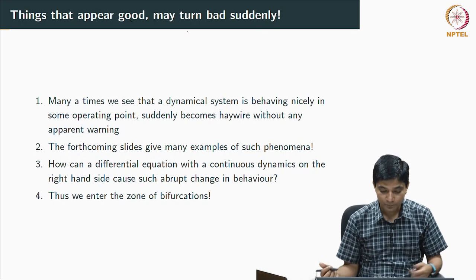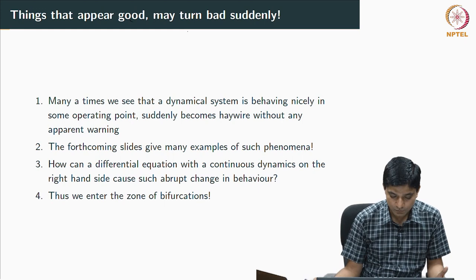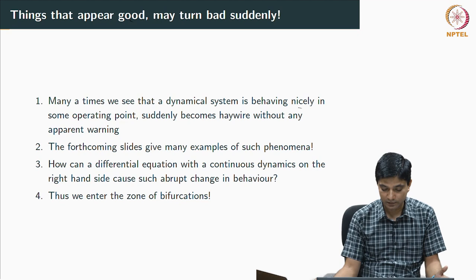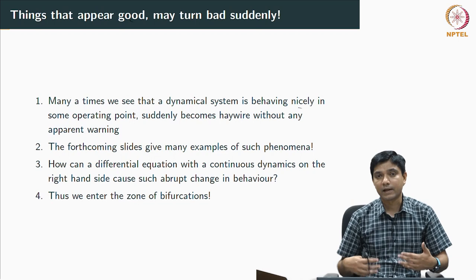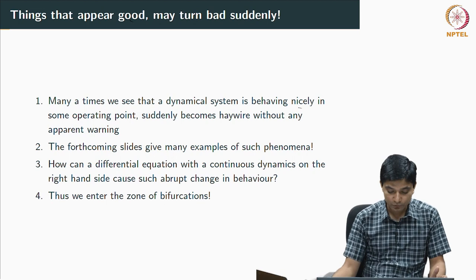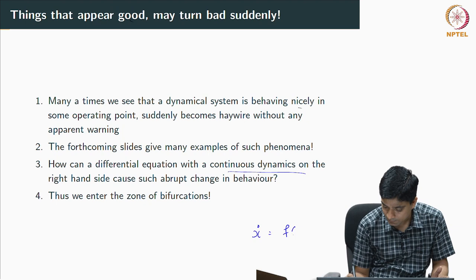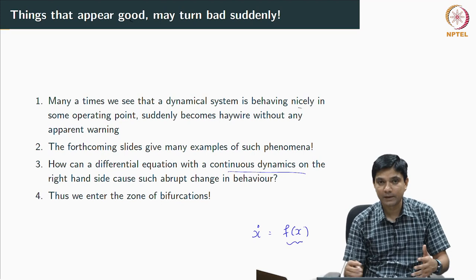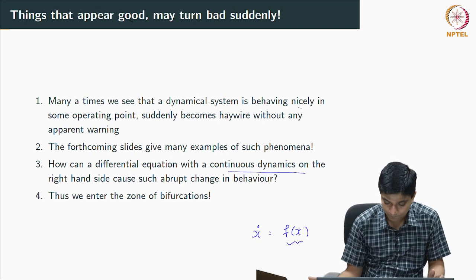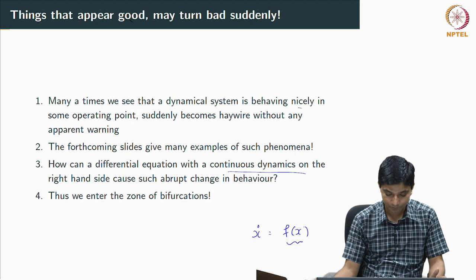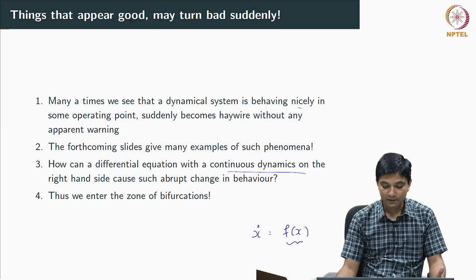Many times we see that a system is behaving nicely around some operating point and suddenly it behaves in a way we would not anticipate, and these things typically come without any apparent warning. We will give examples of such phenomena and try to characterize them in terms of the theory learned so far. We will also try to answer how a differential equation with continuous dynamics on the right hand side — x-dot = f(x) where the right hand side is smooth — can cause such abrupt change in behavior.